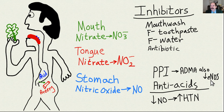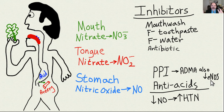Looking at brain scans, a healthy person who eats and lives well will have a brain that looks 30 to 40 years younger than somebody eating a high-fat diet, smoking cigarettes, and drinking alcohol.